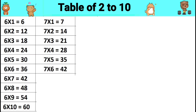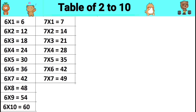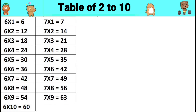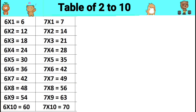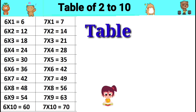Seven sixes are forty-two. Seven sevens are forty-nine. Seven eights are fifty-six. Seven nines are sixty-three. Seven tens are seventy.